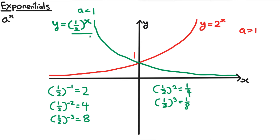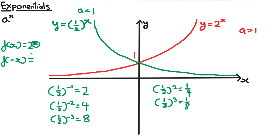You can see that a half to the power of x is the reflection of y equals 2^x in the y-axis. If 2^x equals f(x), then reflecting in the y-axis gives f(−x), which is 2 to the power of minus x. Bringing the minus into the base flips the fraction to a half to the power of x. And once again, it crosses the y-axis at 1 because anything to the power of 0 is always equal to 1.